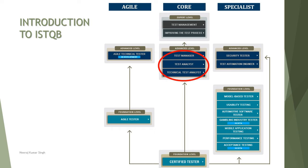If you look at this screen, we have many certifications available with more in beta coming up. We are targeting the Advanced Level core area. Once foundation is done, you can pursue Agile, Core, or Specialist streams. In the core area there are three certifications: Test Analyst for functional testers, Technical Test Analyst for non-functional testers, and Test Manager for the manager of the testing organization.